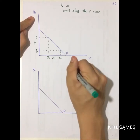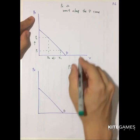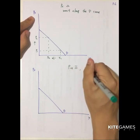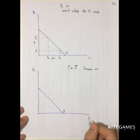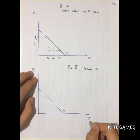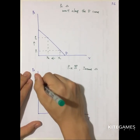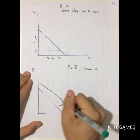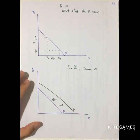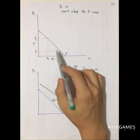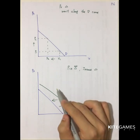If other goods — meaning goods other than X — change in price, or if income changes, this will lead to a change in demand for X while the price of X remains unchanged. We capture this by a shift of the demand curve, either a leftward shift or a rightward shift. So only the price of X changing leads to movement along the curve; if other factors change, this leads to a shift of the demand curve.